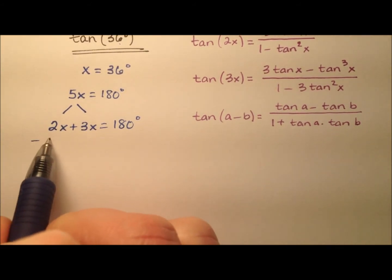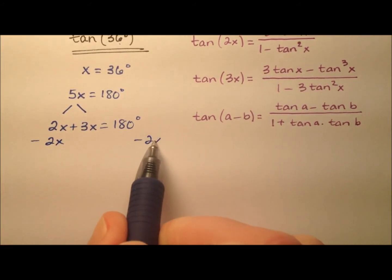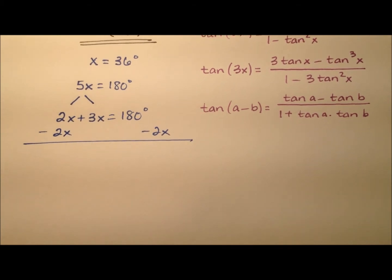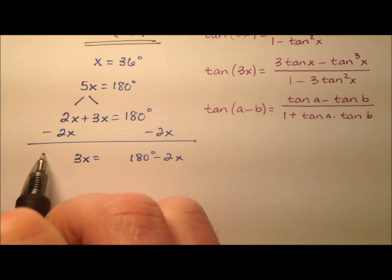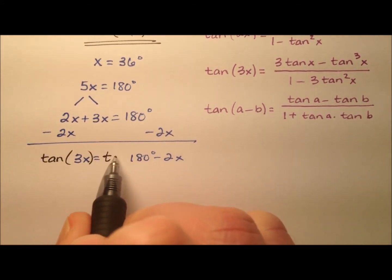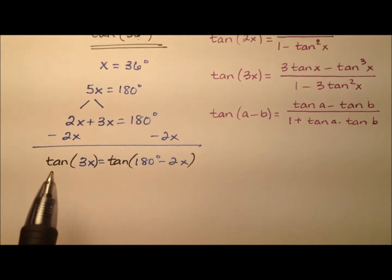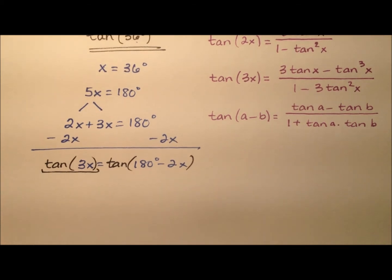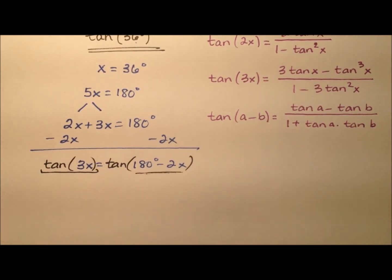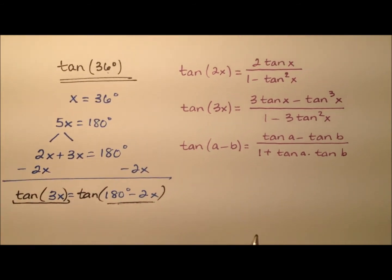And next, I'm going to subtract 2x from both sides. So what I'm going to have is 3x equals 180 degrees minus 2x. And at this point, I'm going to take one more step. And I'm going to take the tangent of both sides of this equation. So what it looks like we have here is the triple angle identity for tangent and a difference identity for tangent as well.